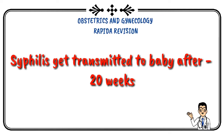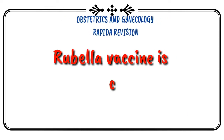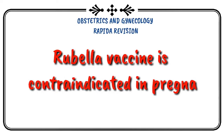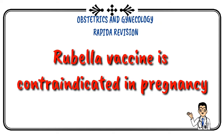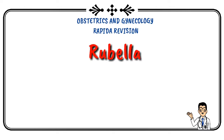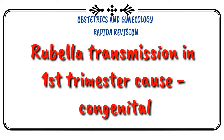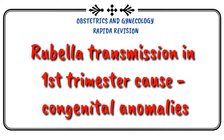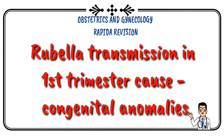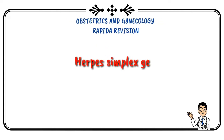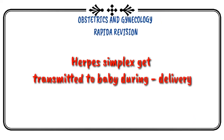Rubella vaccine is contraindicated in pregnancy. Rubella transmission in the first trimester is a common cause of congenital anomalies. Herpes simplex virus is transmitted to the baby during delivery.